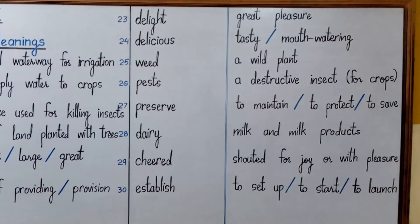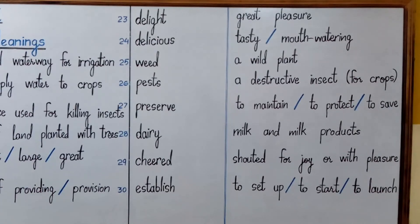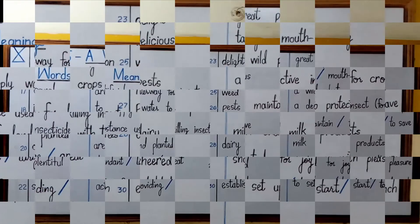Number thirty is 'establish'. It means to set up, to start, to launch, or to begin. So establish means to set up something.